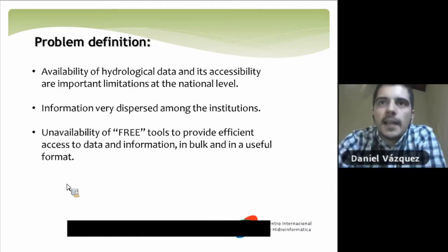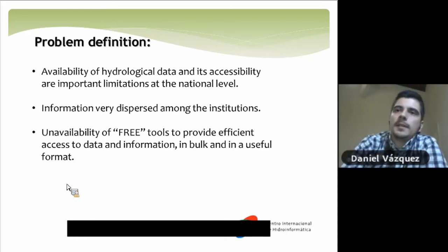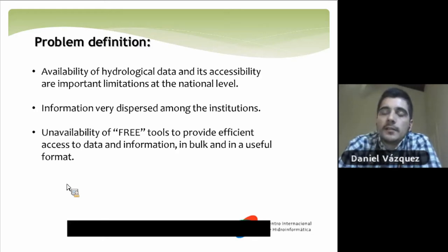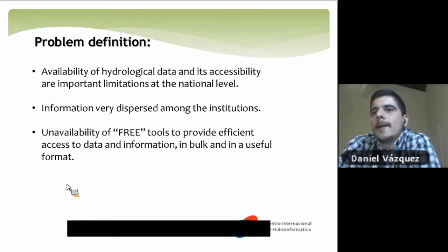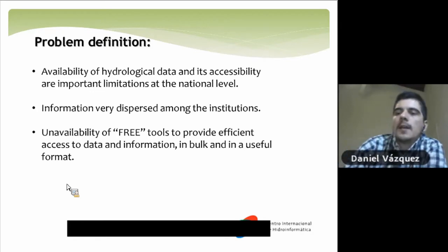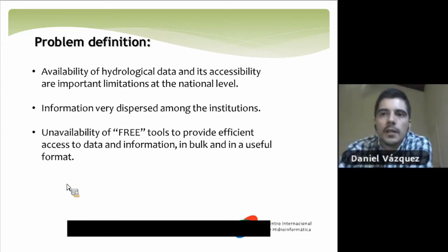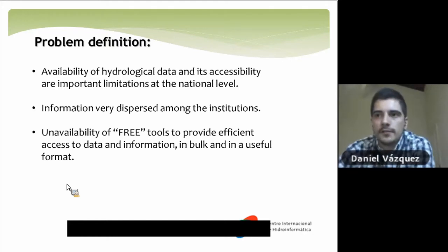At that time, we identified the following problems. This happens across many countries: the availability of hydrological data and its accessibility are important limitations at the national level. Also, the little information that can be found is very dispersed among many institutions, and there is no tool — at least in our country — that can provide efficient access to this data. The main problems are the floods, and we wanted to provide a tool to help reduce their impacts.